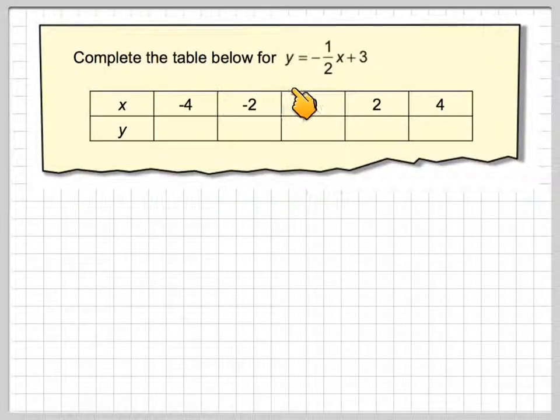Complete the table below for y equals minus one-half x plus 3. We're using substitution here. What we're going to do is find the value when x is minus 4, minus 2, 0, 2, and 4.